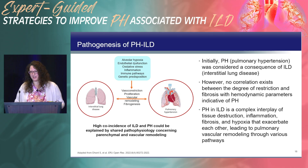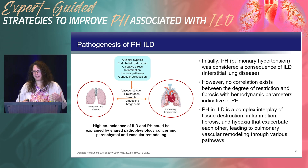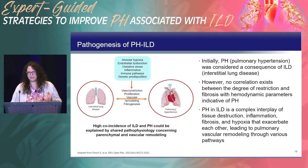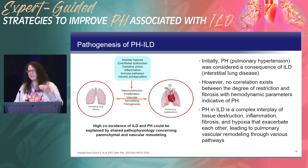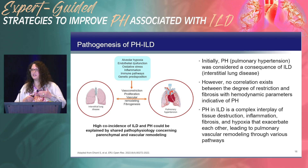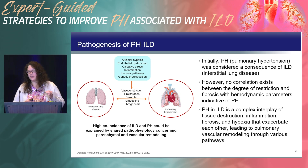Regarding pathogenesis of PH-ILD: a decade ago, we thought pulmonary hypertension was directly related to ILD progression. However, no clear correlation exists between the degree of restriction and fibrosis and the development of pulmonary hypertension. Think of it differently — it's a complex interplay of both diseases, with tissue destruction, inflammation, fibrosis, and hypoxia leading to changes in the blood vessels of the lungs, and those processes also changing the pulmonary fibrosis, creating a shared pathophysiology.